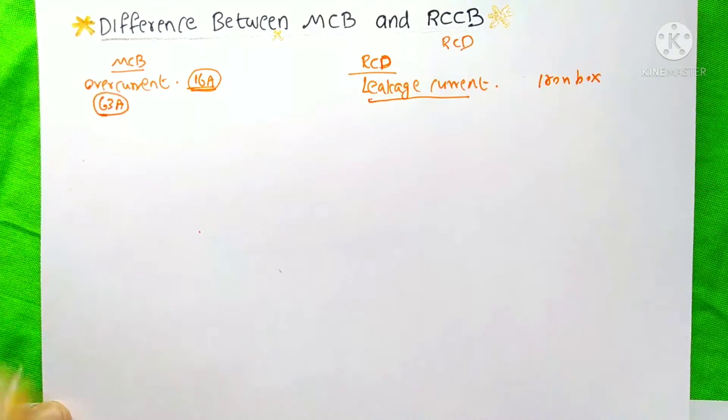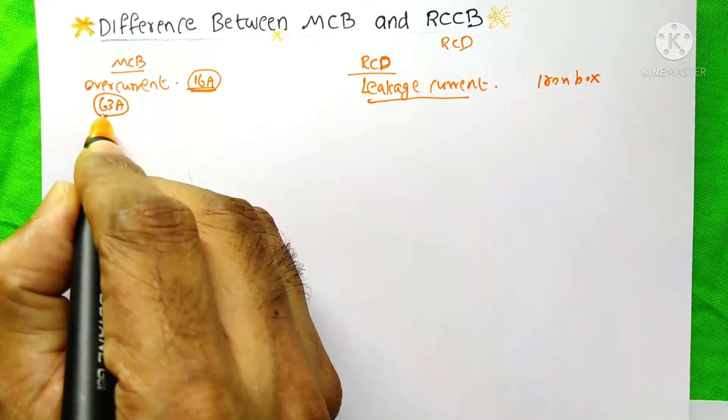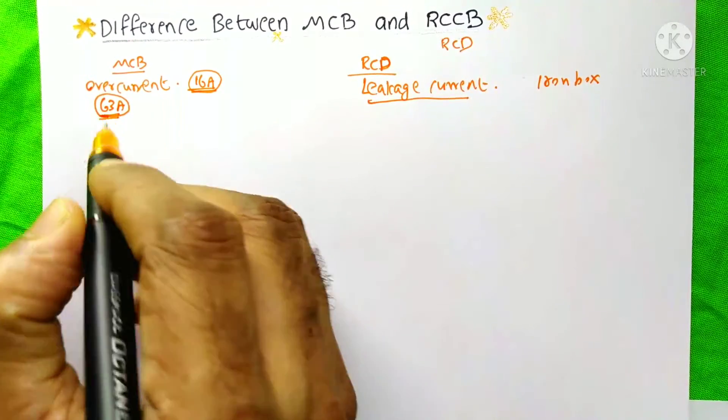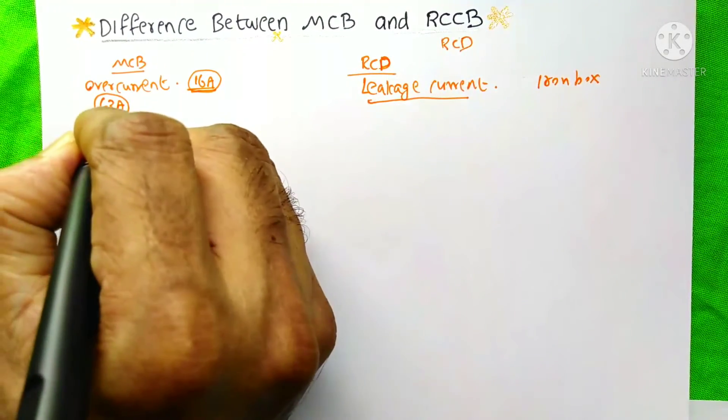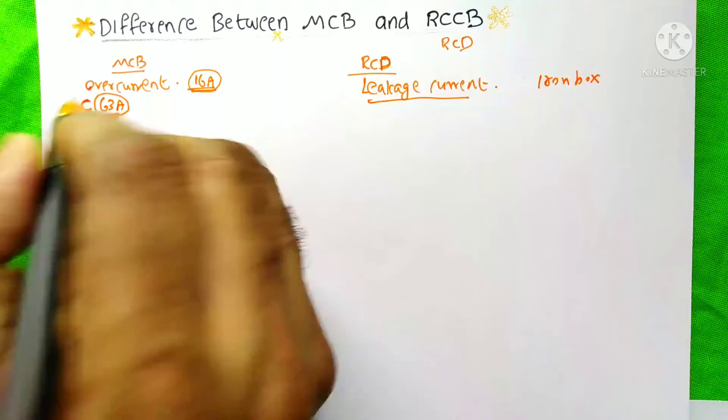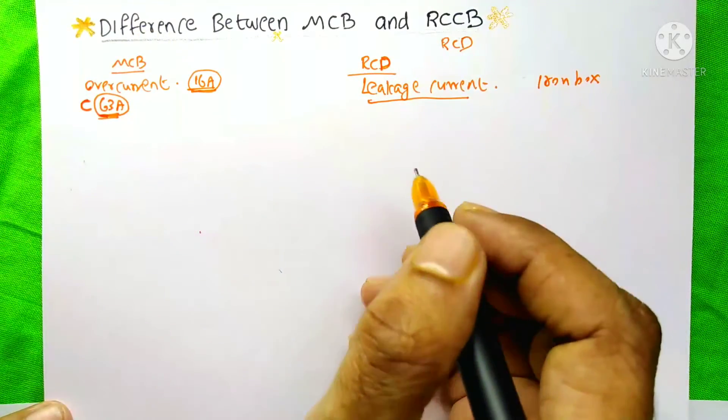And here, the MCB is available only up to the 63A rating. And if you see a 63A MCB, then before this 63A you can see an alphabet - C, R, B, D, just like that. This indicates the curves of this MCB.